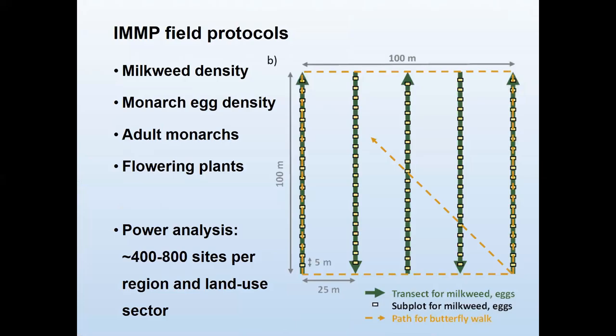Not only are we thinking continentally, we're also measuring a lot of things when we're out there. A power analysis suggests we need to monitor 400 to 800 sites for about 10 to 15 years before we can start to answer questions about what is occurring in adult monarchs and milkweed. We have no hope of detecting a trend in eggs because they're very hard to find. That's 400 to 800 sites per region and also per land use sector.